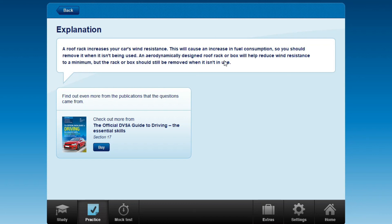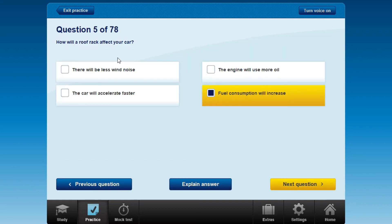An aerodynamically designed roof rack or box will help reduce wind resistance. If you use an aerodynamically designed roof rack or box, the resistance can be reduced and your car will use less fuel. But the rack or box should still be removed when it isn't in use. Aerodynamically basically means when your car resists the wind, this design will give you better efficiency and reduce fuel consumption.